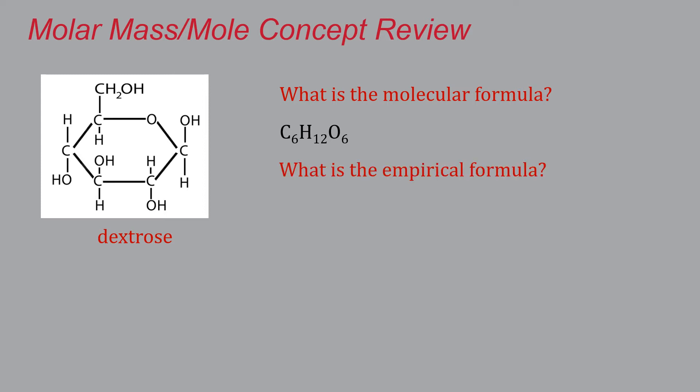The next question is, what's its empirical formula? Remember, the empirical formula is simply the smallest whole number ratio of the number of atoms of each element. You can reduce that by dividing everything through by six, which gives you an empirical formula of CH2O, which means that the atoms of carbon, hydrogen, and oxygen are present in a one to two to one ratio, respectively.